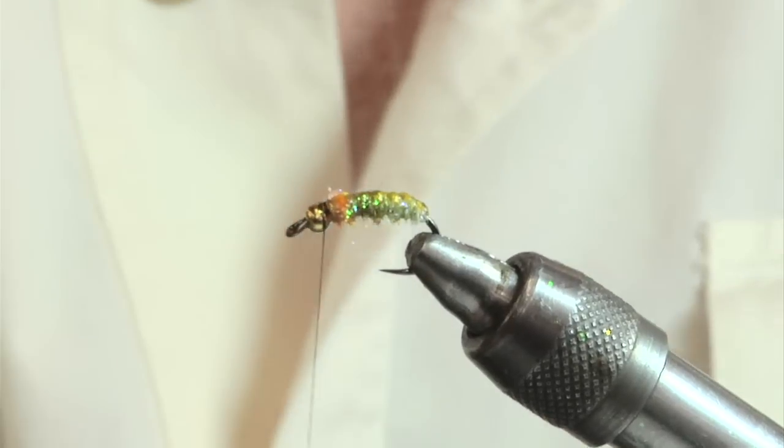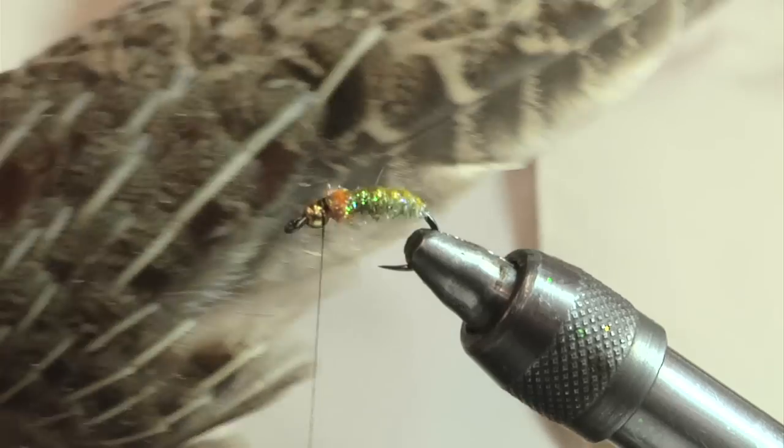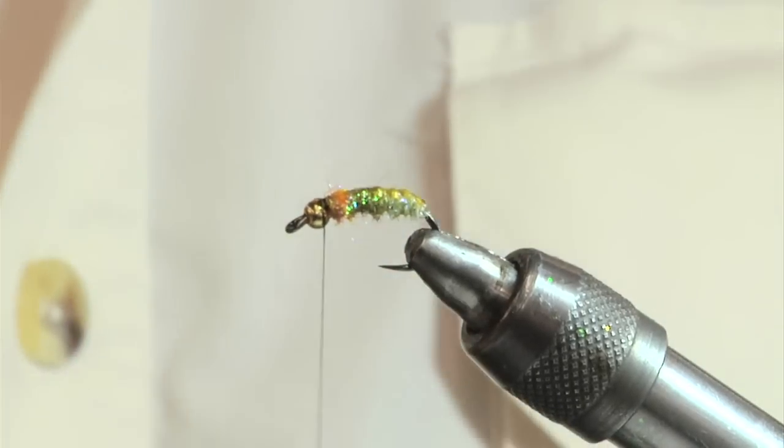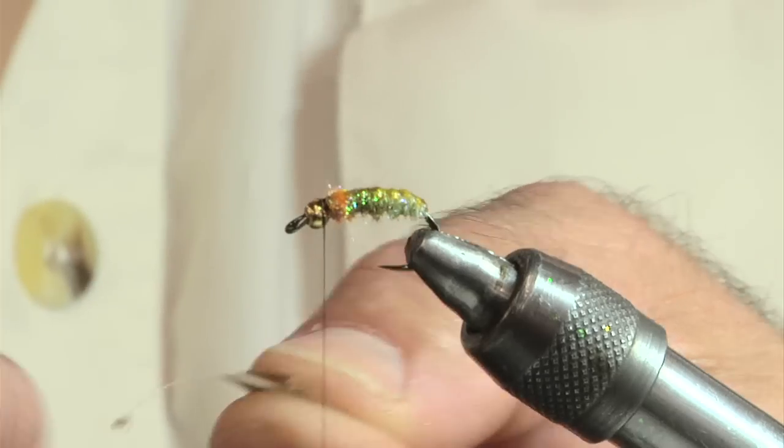Now I'm going to use some pads. This is from a Hungarian partridge. It's the base of the wing and it has a stripe in it. I've already stripped a couple here. I stripped back the fluff off of it.